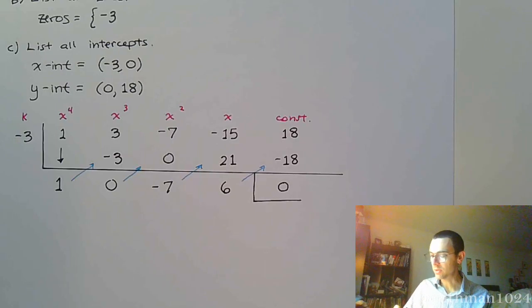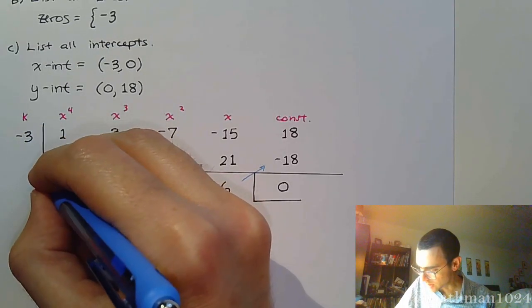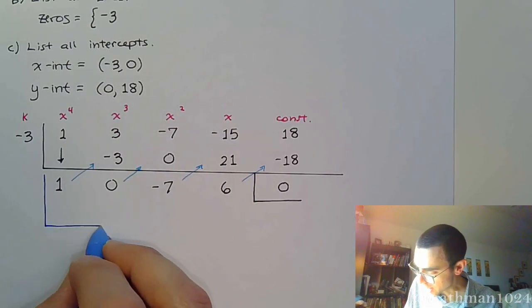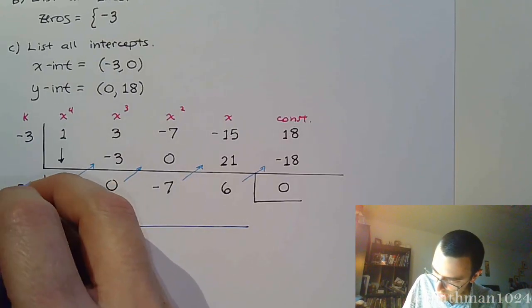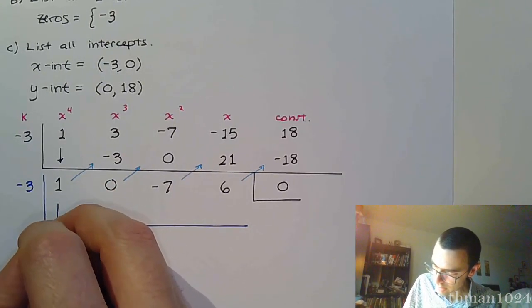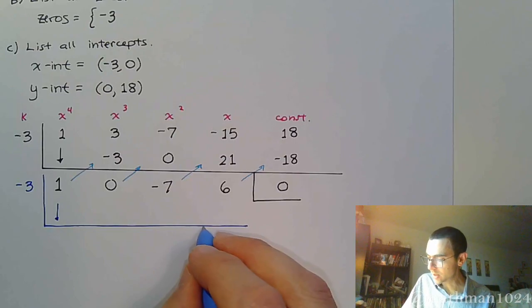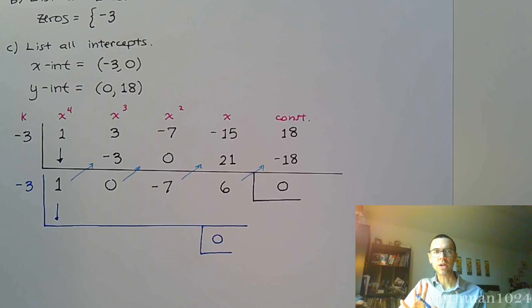Since we have a multiplicity of two, that means that I can use synthetic division again with that same value. So I can do negative three here, and I should have a remainder of zero at the end. So let's make sure that this works out right.